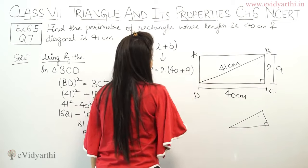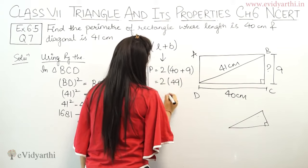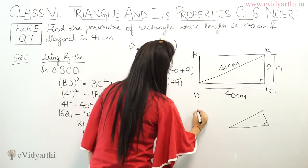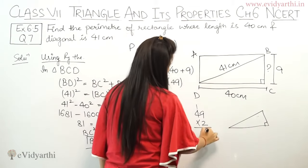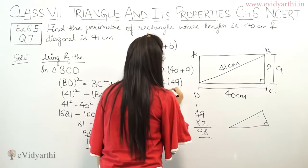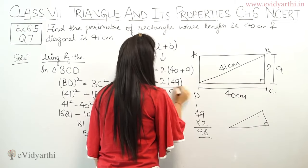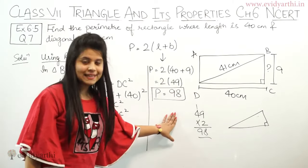So now let's find the perimeter. 2 times 40 plus 9 is 49. Now multiply it. 49 into 2 will be 9 times 2 is 18, and 4 times 2 is 8 plus 1 is 9. So we have 98. That means the perimeter of the rectangle is 98 centimeters.